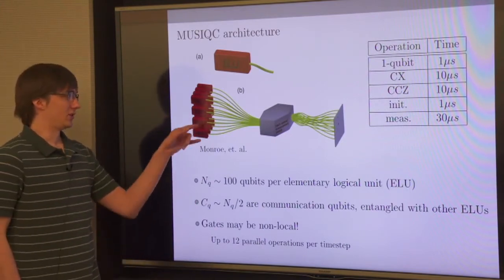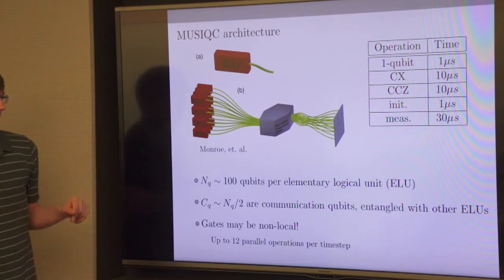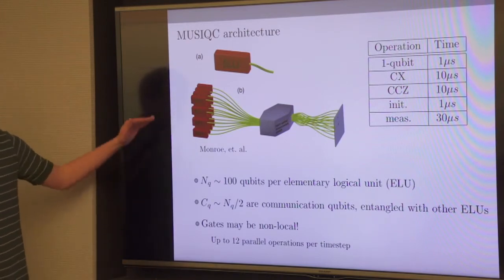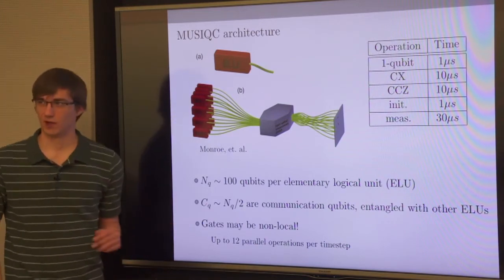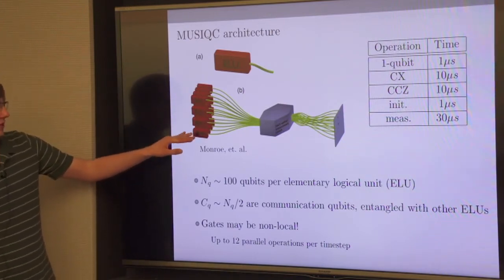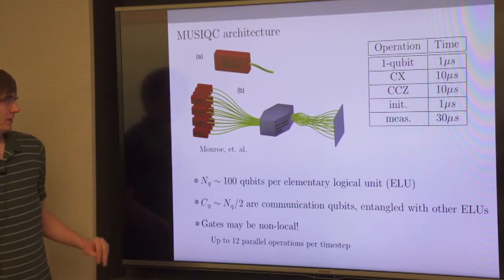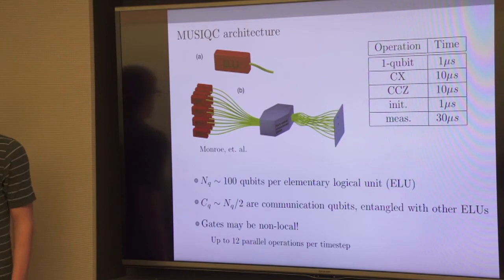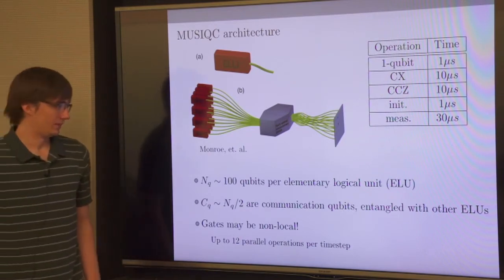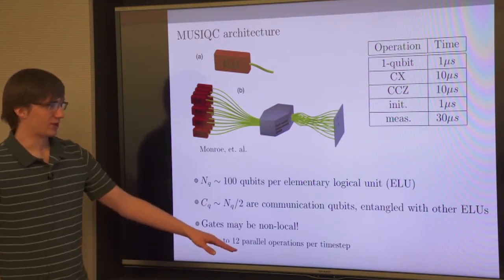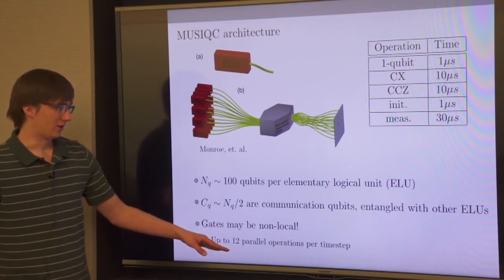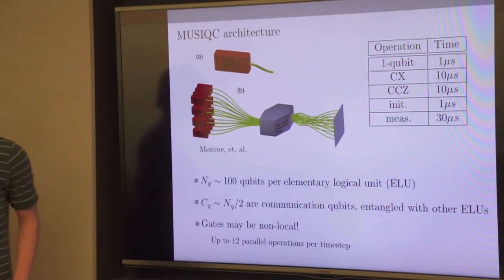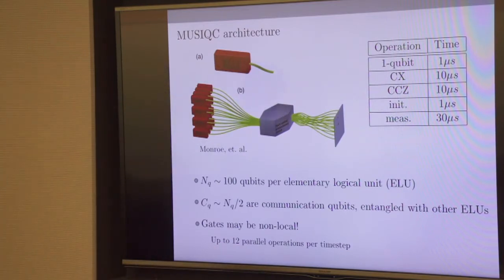The communication qubits are in Bell pairs between different traps, and you can teleport your data back and forth. Importantly, the gates here can be non-local: within an ELU you can interact any two qubits, and between ELUs you can interact qubits by teleporting gates. There is some limitation to this locality — a realistic estimate is that you can only apply 12 two-qubit operations in parallel — but it doesn't come up much in our simulations.